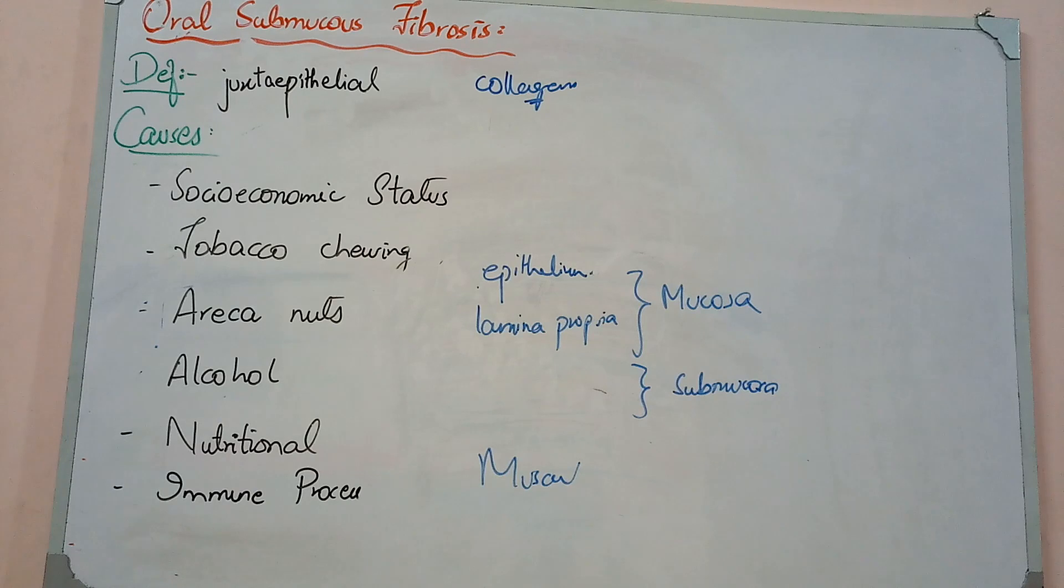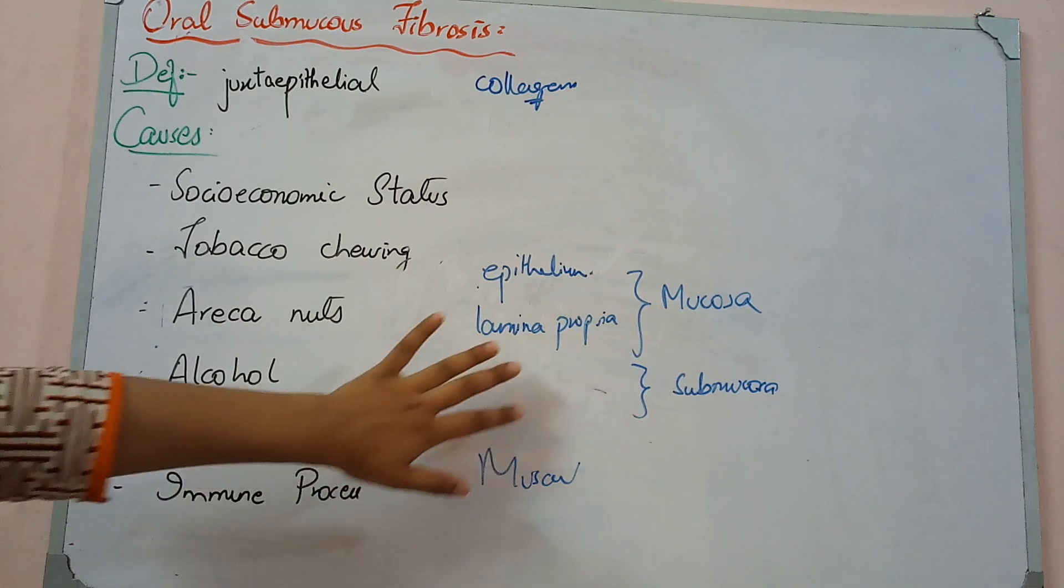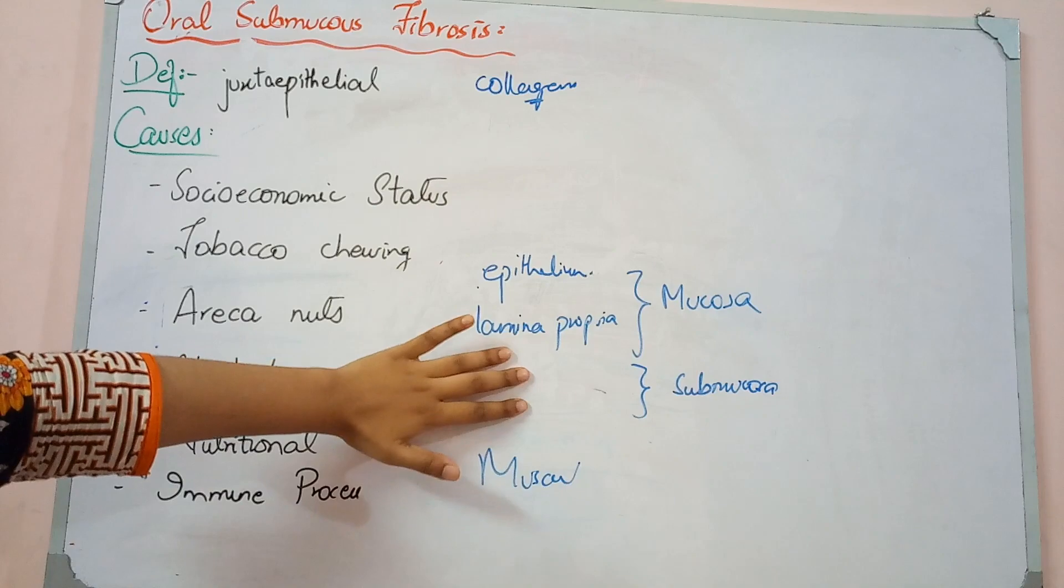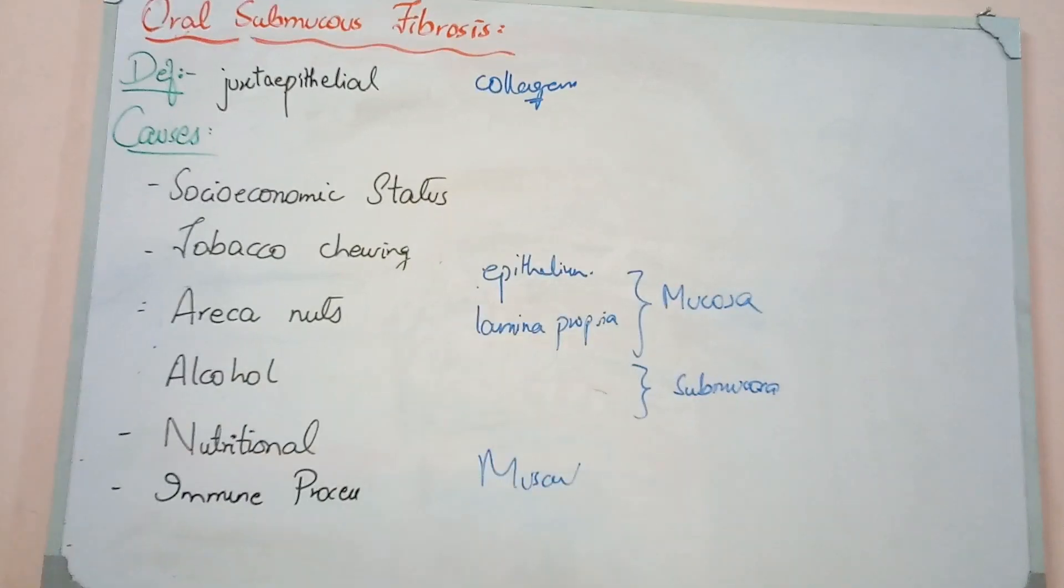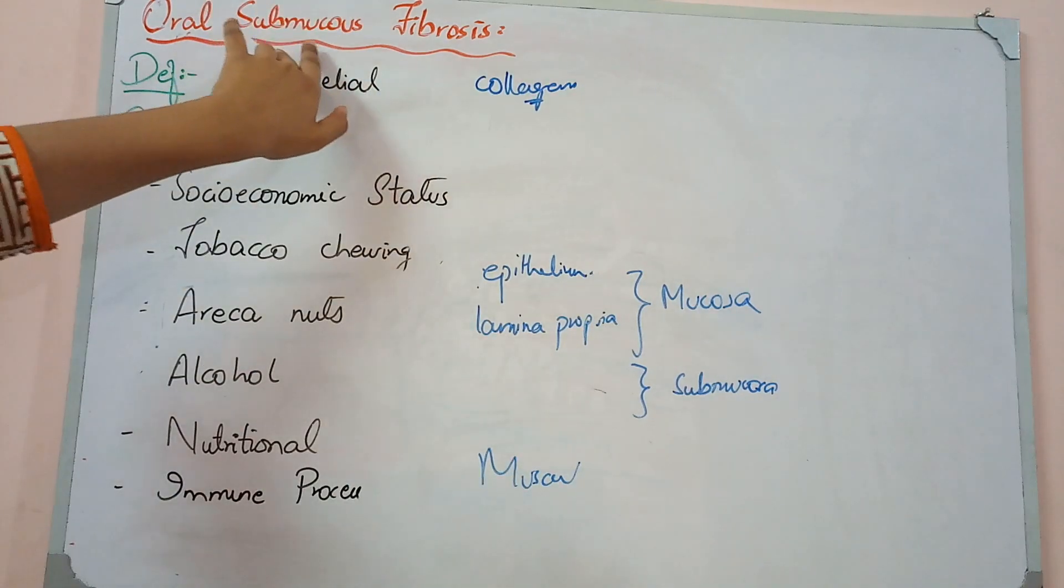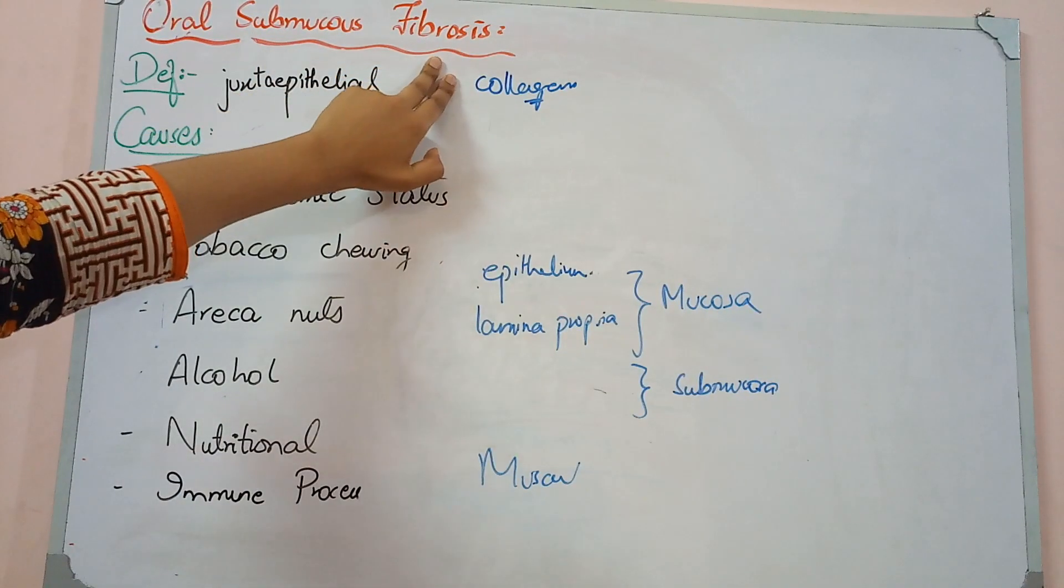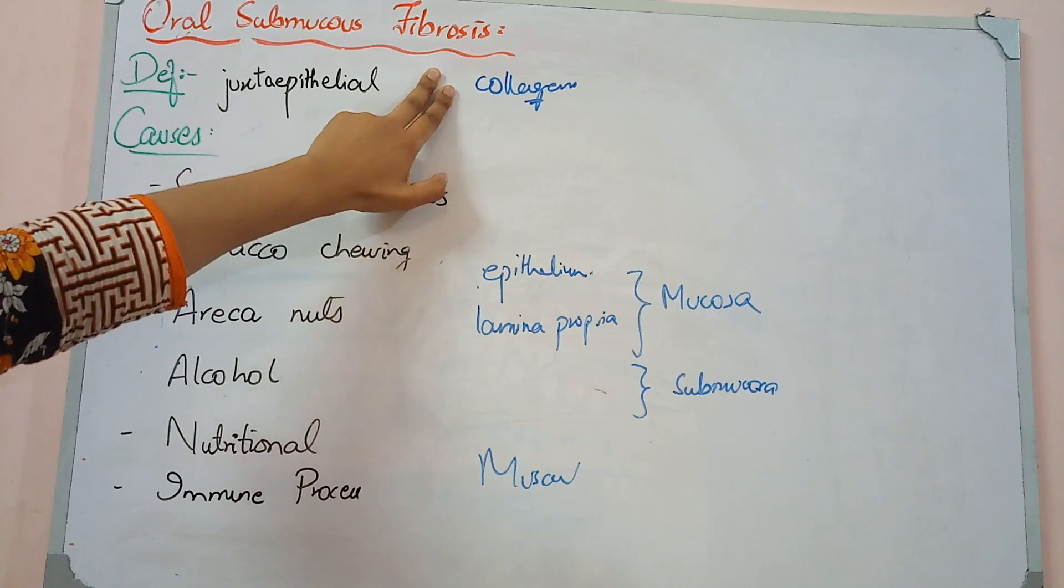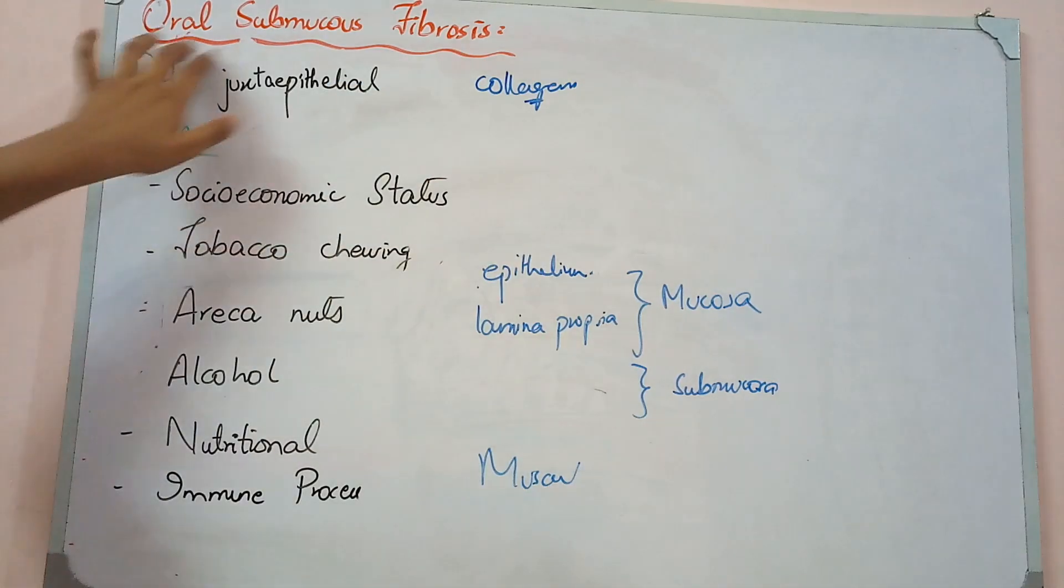Collagen fibers create toughness and rigidity. If the number of collagen fibers increases, this area will become more than normal, tough and rigid. Our mouth is normally mobile, but with more collagen fibers, mobility decreases. This is the condition of fibrosis in submucosa. We call it oral submucous fibrosis.